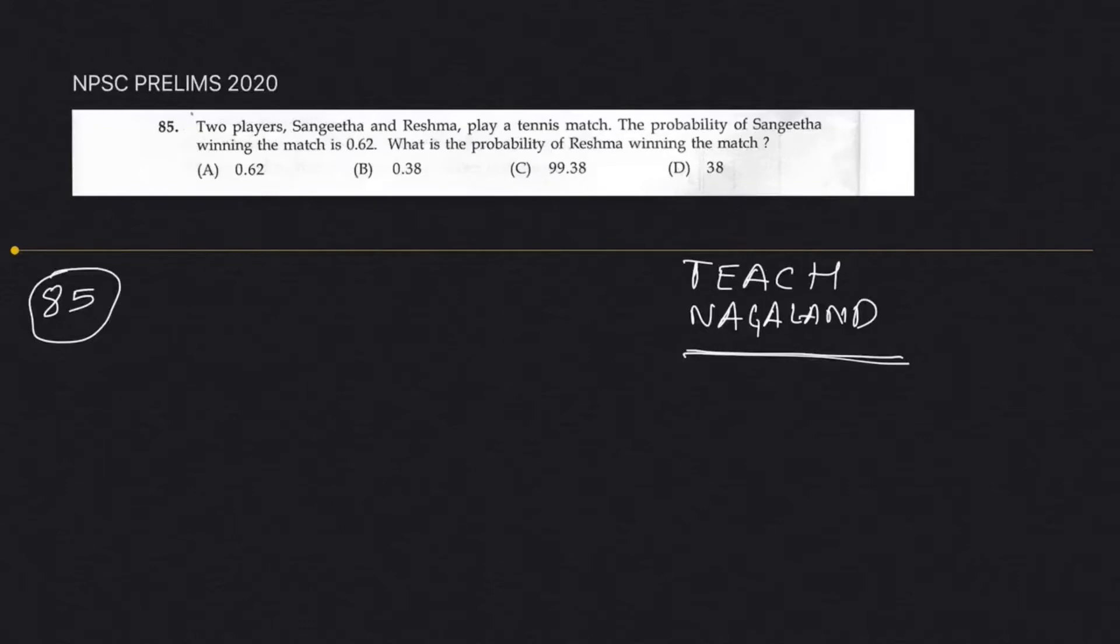Let's start with question 85. Two players Sankita and Reshma play a tennis match. The probability of Sankita winning the match is 0.62. What is the probability of Reshma winning the match? These are not competitive exam level, it's like class 10 exam, what is 2 plus 2.